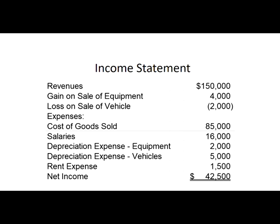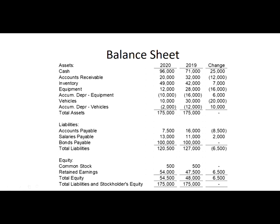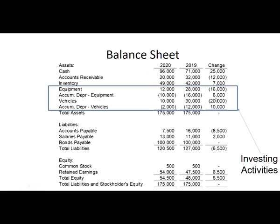Looking at these items on the income statement, we saw the gain and loss on vehicle and equipment. We saw these items basically appear just to remove them from income. For investing activities, we're excluding cash, but everything else — accounts receivable, inventory, accounts payable, salary payable — are all included in operating activities. We're focusing on four accounts: equipment, accumulated depreciation equipment, vehicles, and accumulated depreciation vehicles. And we're going to start with equipment.